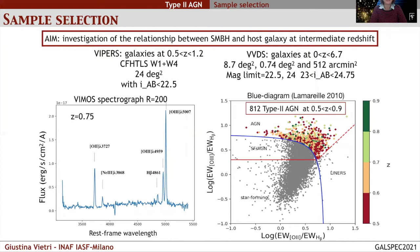VIPERS was designed to sample galaxies at a redshift range from 0.5 up to 1.2 within two different fields from the Canada-France-Hawaii Telescope Legacy Survey wide field, with a covering area of 24 square degrees and a magnitude limit of 22.5. VVDS was designed to sample galaxies at redshift range from 0 up to 6.7 within three different complementary surveys — wide, deep, and ultra-deep — with different covering areas and magnitude limits.